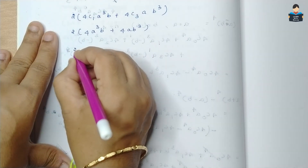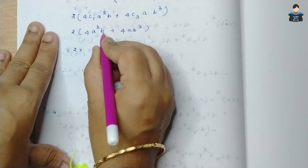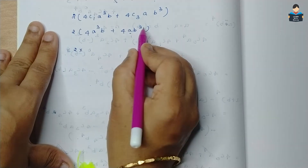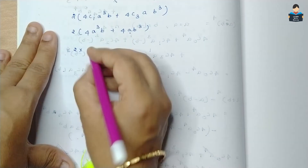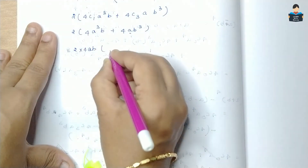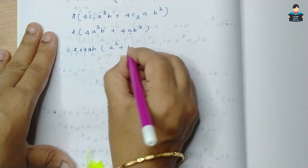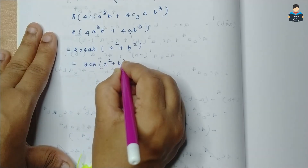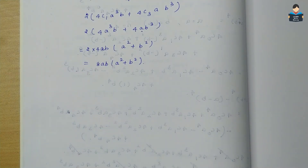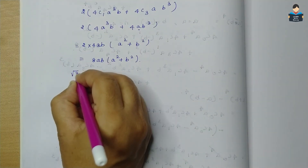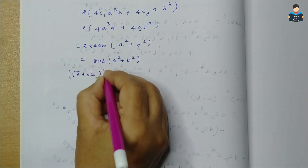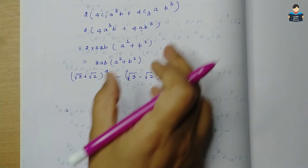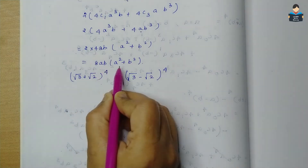Now substituting a = √3 and b = √2 into 8ab(a² + b²): we get 8 · √3 · √2 · (3 + 2) = 8√6 · 5. So the answer is 40√6.